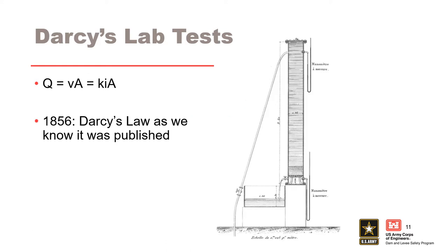Darcy later took a position at one of the premier educational institutions in France, giving him the opportunity to run laboratory experiments to test his ideas. He developed a device quite similar to a modern permeameter. Using this device, Darcy discovered what we now refer to as Darcy's Law for describing the flow of water through soil. This was the first step towards a scientific understanding of dam design and internal erosion.